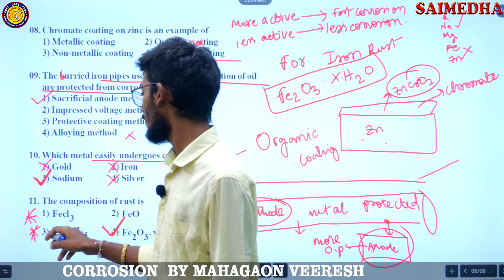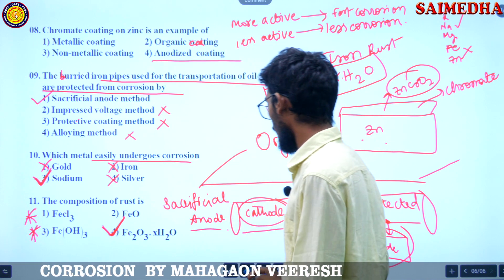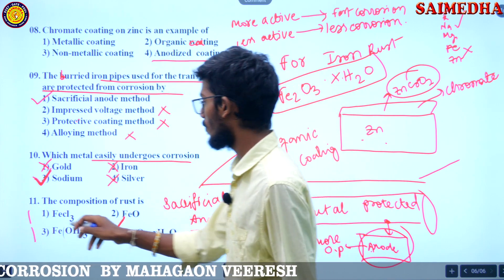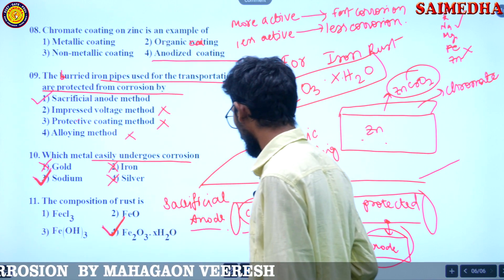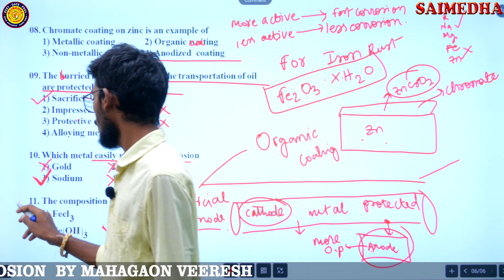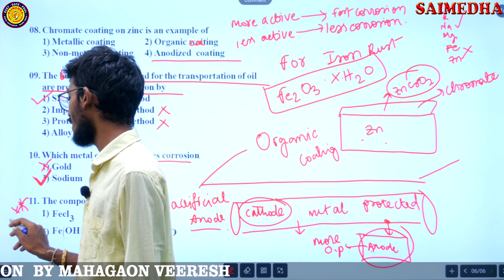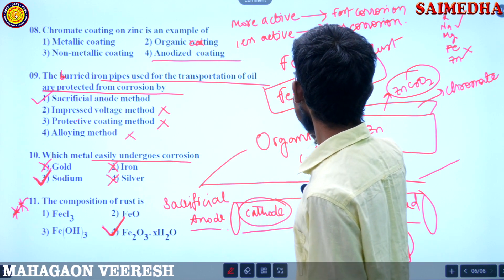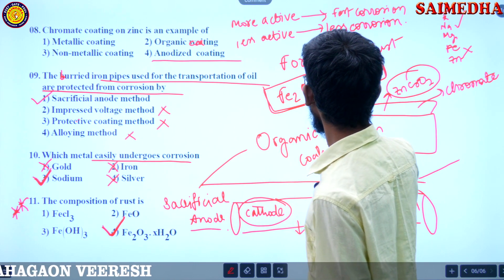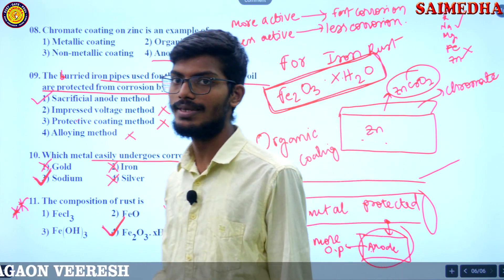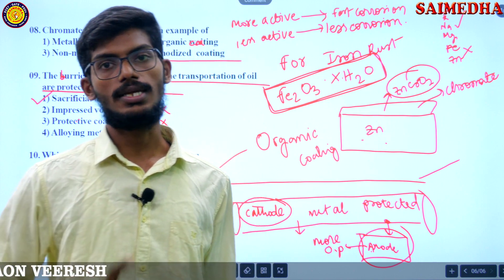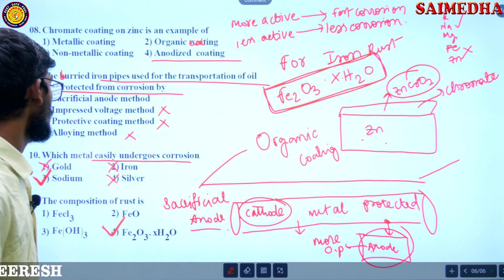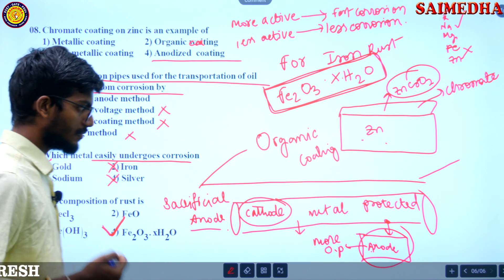The formula for iron rust is Fe2O3·xH2O. It is not Fe(OH)2. Iron rust means only Fe2O3·xH2O. Please remember this formula very clearly. These are the questions we have; take a complete note of this.